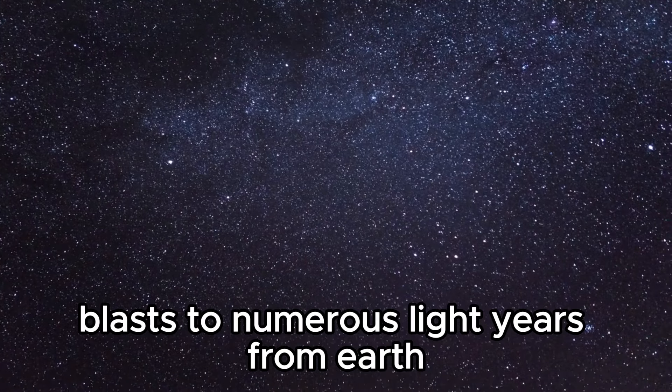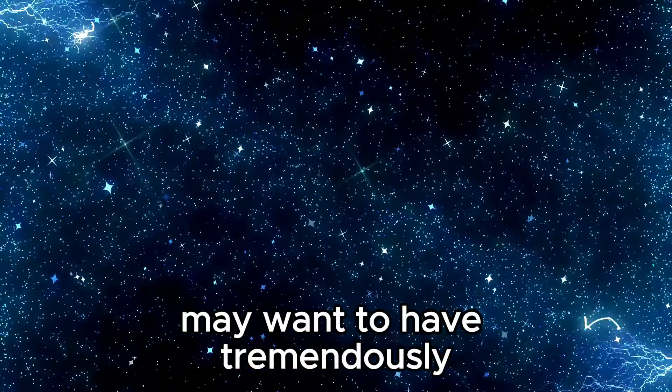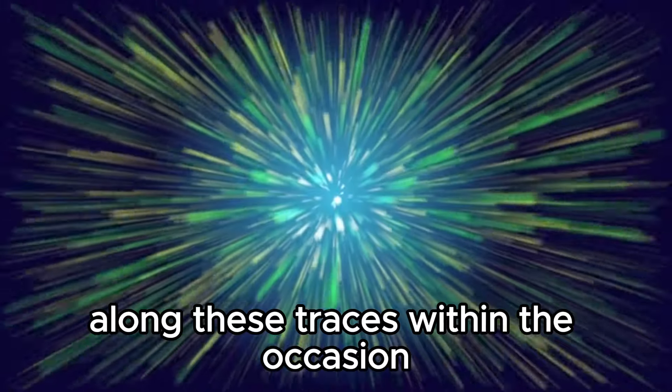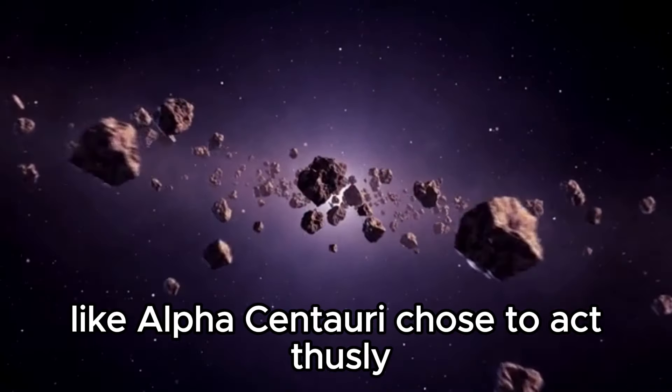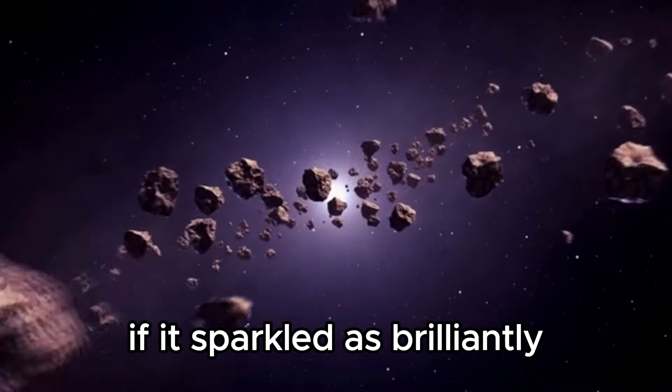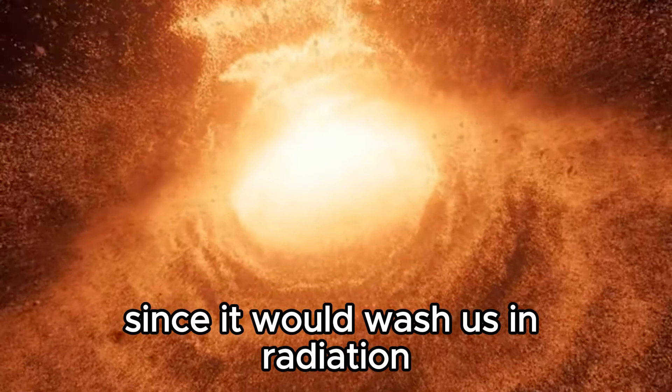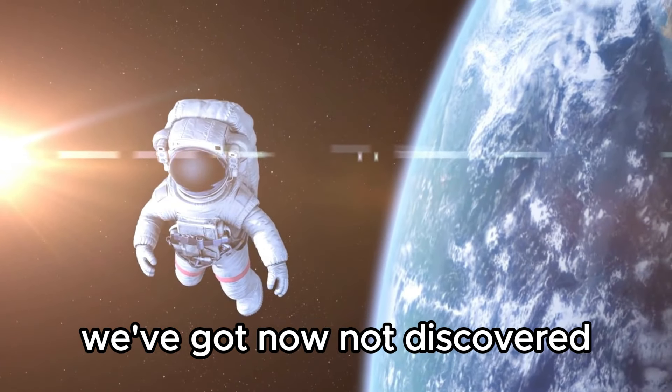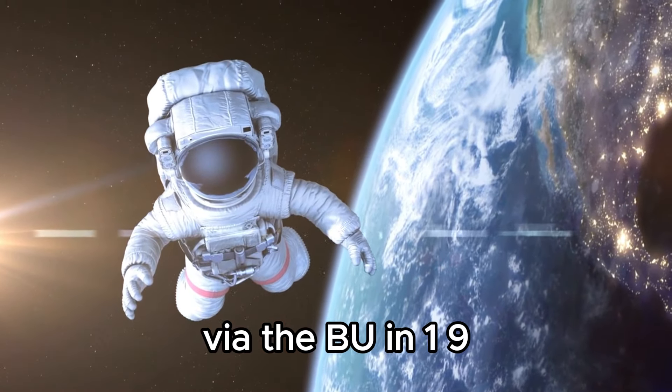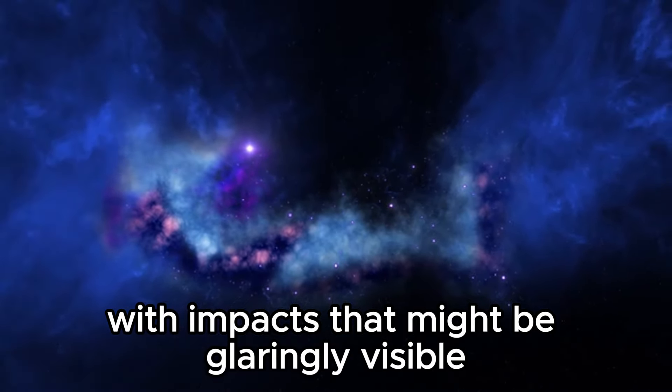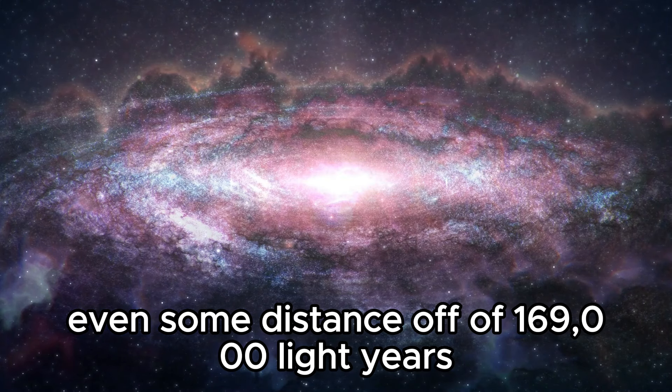A supernova blast numerous light-years from Earth could have tremendously devastating repercussions. A massive blast can produce light equivalent to an entire galaxy. If one of our nearby neighbors like Alpha Centauri chose to explode, we couldn't miss it. It wouldn't matter if it shone as brilliantly as the moon since it would wash us in radiation. However, since 1604 we have not discovered a supernova in our galaxy. SN 1987A ejected in the Large Magellanic Cloud with impacts that are visible even from a distance of 169,000 light-years.